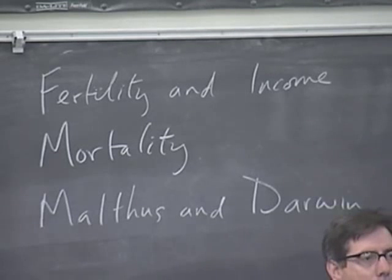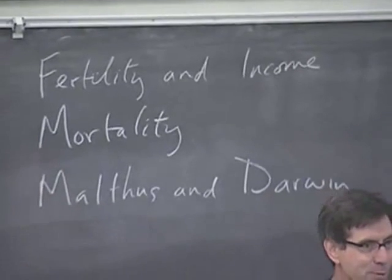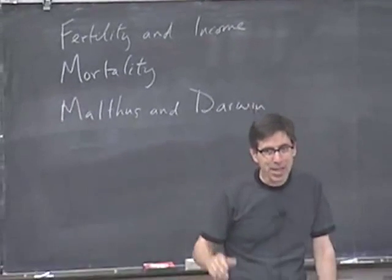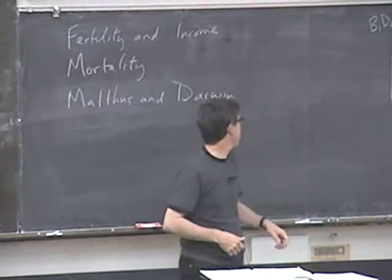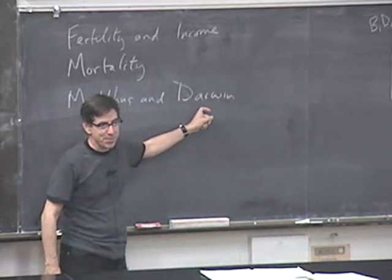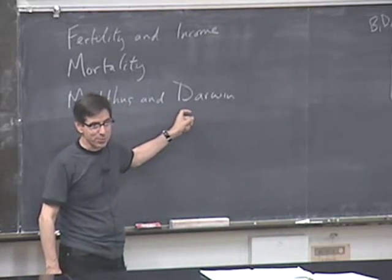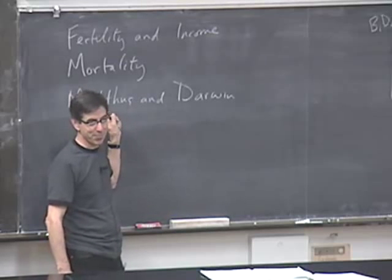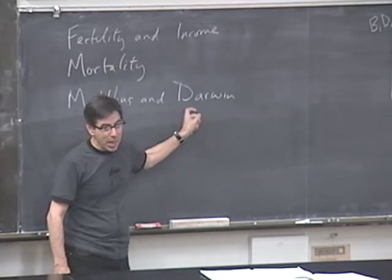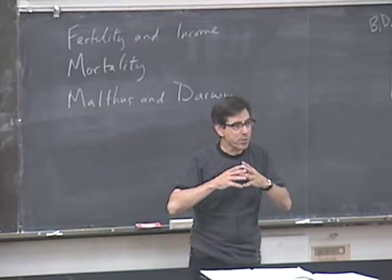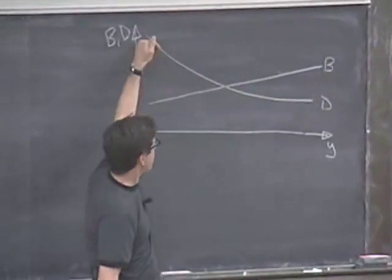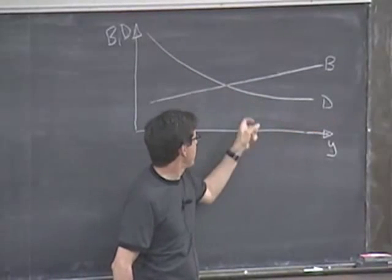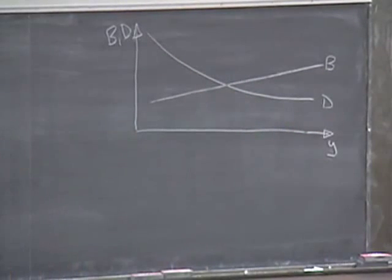Today I hope to finish up talking about the static Malthusian model in all of its details. We're actually falling behind a little bit, and then we're going to see that there's going to be some interesting dynamism in this Malthusian world, because of a close connection between the ideas of Malthus and those of Darwin. But first, we have to finish up talking about fertility — what's the shape of this schedule in the pre-industrial world? — and then mortality, and do we really observe this crossing of these schedules?